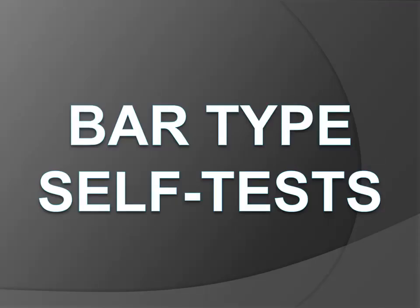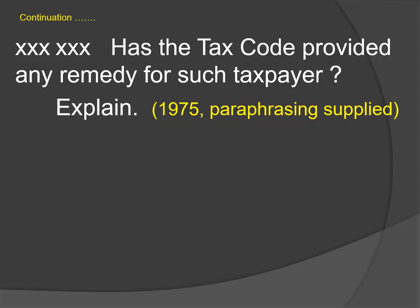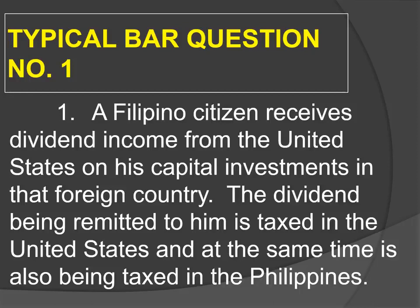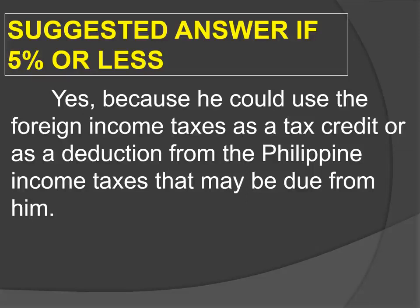What questions have been asked in the bar related to this? Here you have a fact-based problem that is short, so you don't go to the bottom — you go directly to the question. The factual setting: a Filipino citizen receives dividend income from the United States on his capital investments in a foreign country. The dividend being remitted to him is taxed in the United States and at the same time is also being taxed in the Philippines. Has the tax code provided any remedy for such taxpayer? Yes, because you could use the foreign income taxes as tax credit or as a deduction from the Filipino income taxes due — one sentence answer, already perfect for 5% or less.